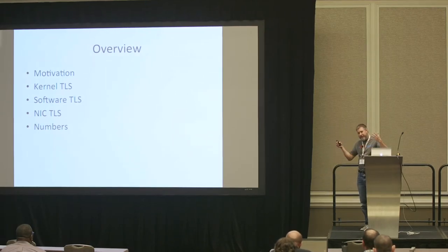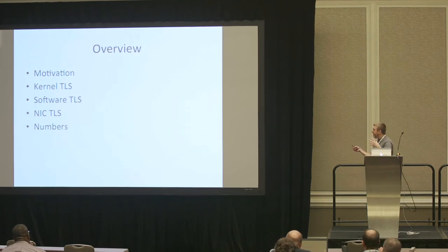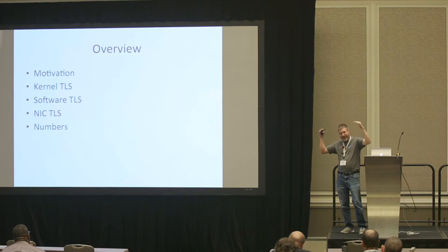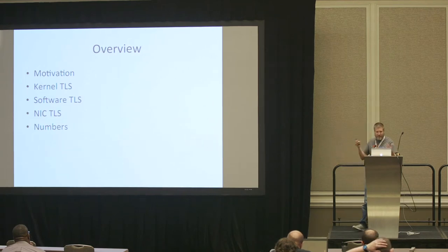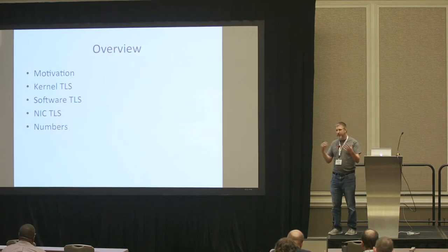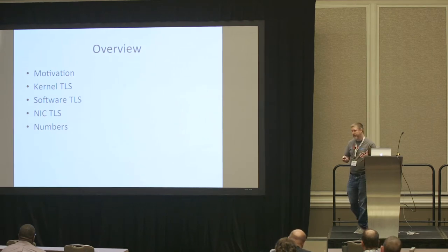I want to spend some time talking about why do this — why take the approach of moving this work into the kernel. Once that's out of the way, we'll spend some time talking about kernel TLS and a little bit of its structure. Then we'll cover the two main modes TLS currently operates in: one called software TLS and one called NIC TLS. And then I have some numbers at the very end.